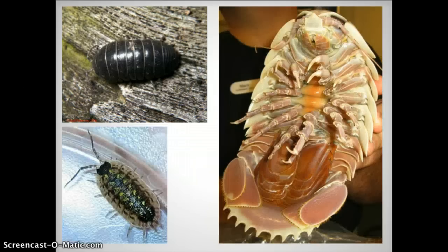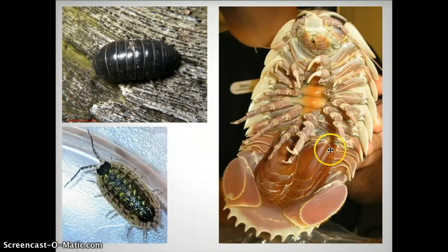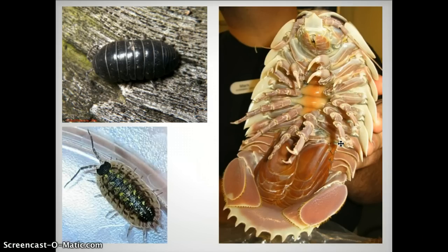Here are some pictures of different isopods. The ones you're probably most familiar with are pill bugs, sowbugs, roly-polys — we've seen those in class. This is a great picture where you could pause and try to count legs to see if you can find seven legs on each side. You can always go back and pause earlier in the video to write things down.